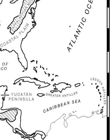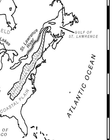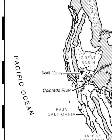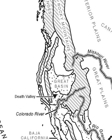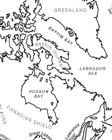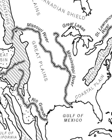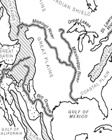In addition to landforms, this map also shows major waterways. Due to the wide variety of physical features in North America, only the major waterways are seen here. They include oceans, seas, and major rivers. In addition, you can also find a few gulfs as well.